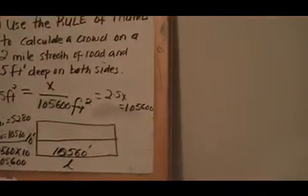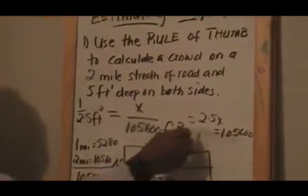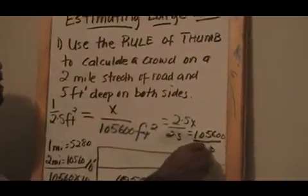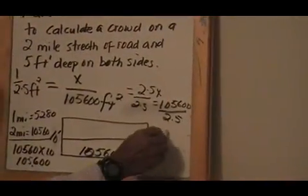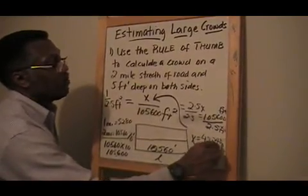Now, after the process, all I have to do is to divide both sides by 2.5. So, I divide 2.5, divide this by 2.5 and that will give me X is going to equal to 42,240 people.